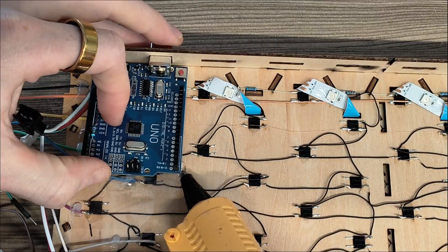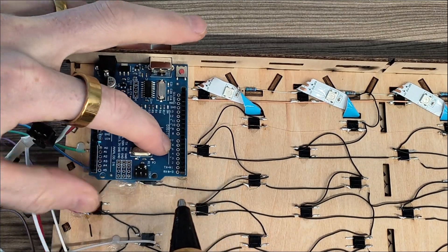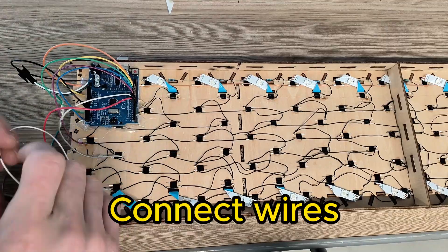So we just solder up the data line. And then we just glue in our Arduino board on the back. And then we can connect all the different wires for the different pins.